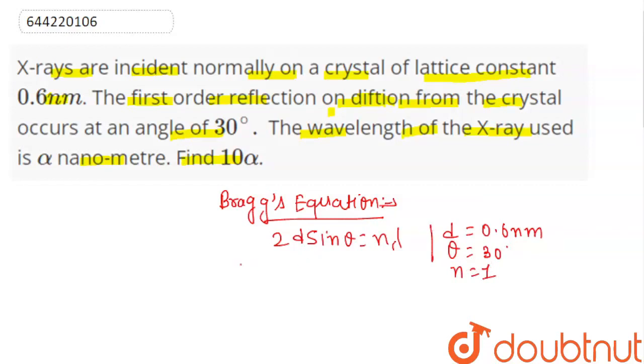Now we need to write the values. Then we have 2 into d, 0.6, into sin theta equals n, value 1, into lambda.